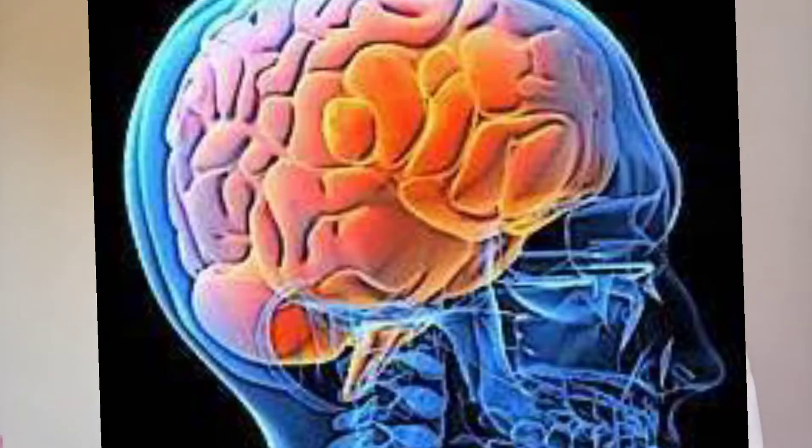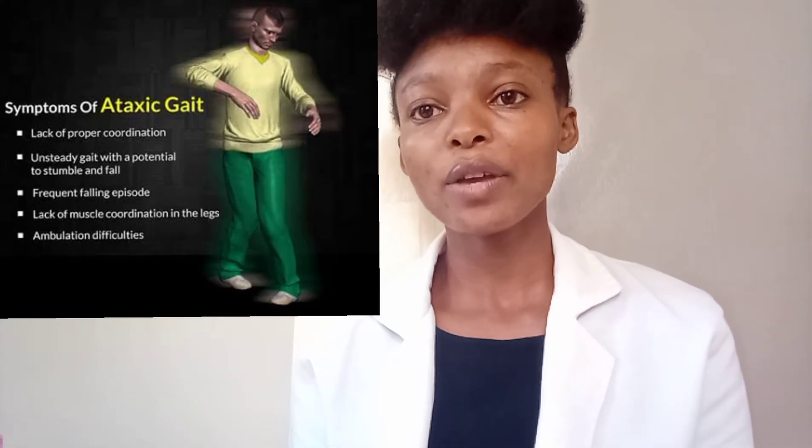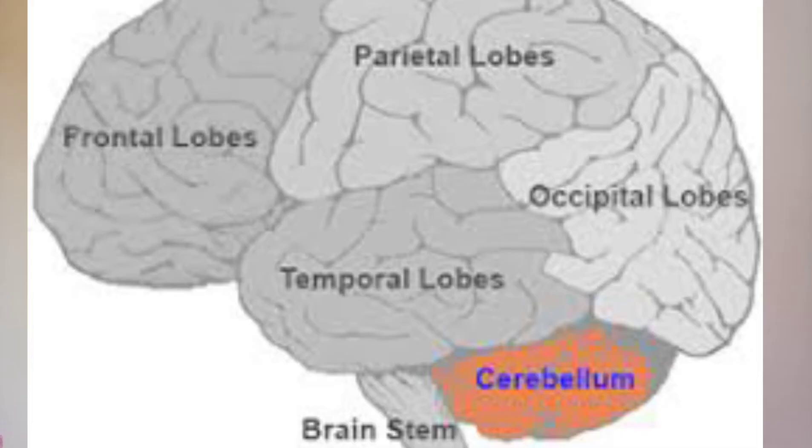Alcohol also causes brain damage by causing the death of cells, especially the white and gray brain cells. Another effect is ataxia, where there is poor coordination and a person has no balance or control. It also affects a part of the brain called the cerebellum, which is why an alcoholic person will often stagger when they are drunk.